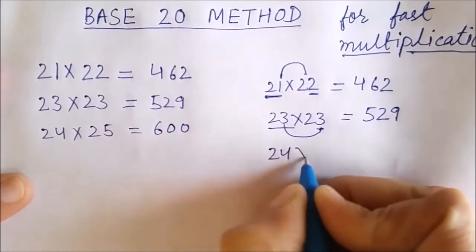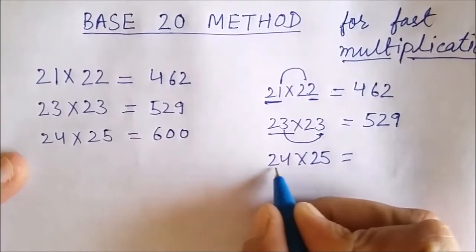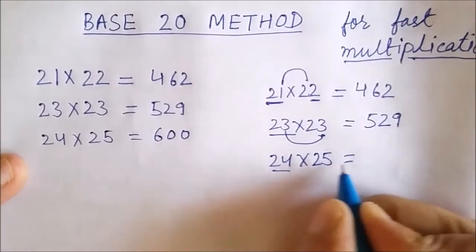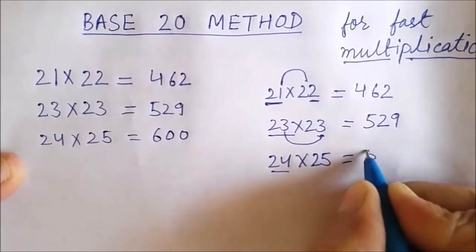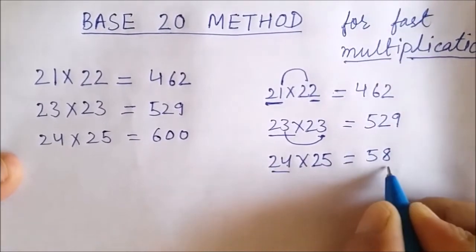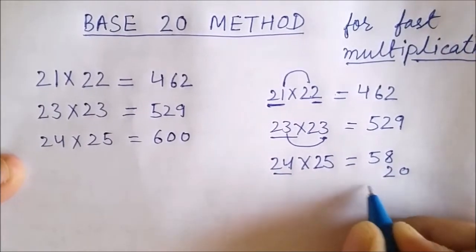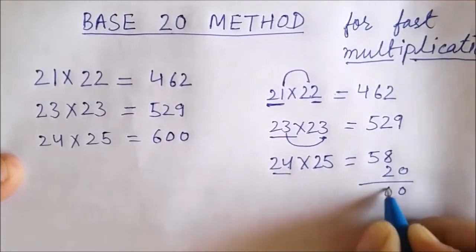Similarly, for 24 multiplied by 25, I added this 5 to this 24. I got 29. And I just doubled that number. This is 58. Then 5 fours are 20. I added 20 also. So, I got 600.